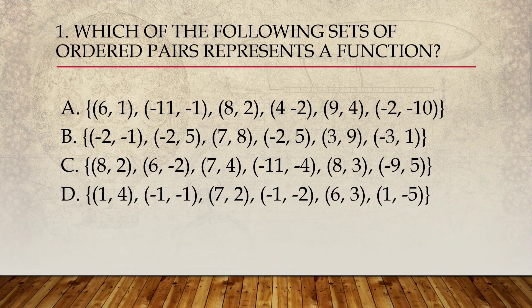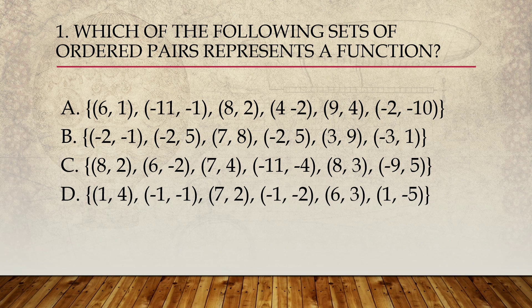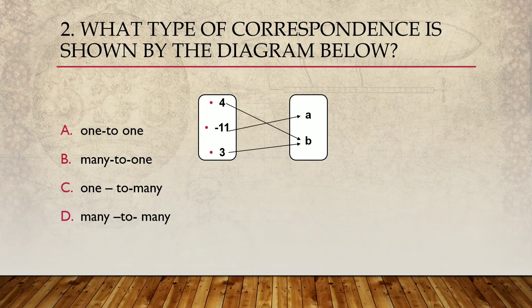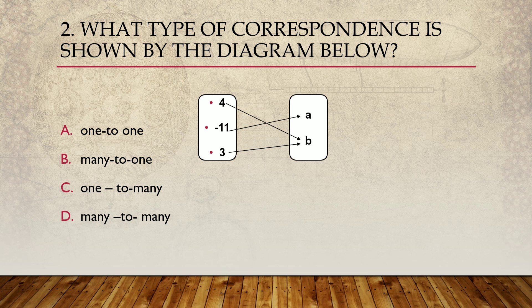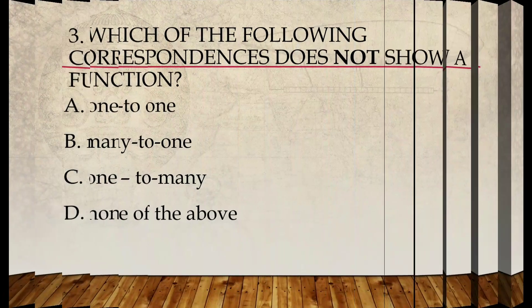Number one, which of the following sets of ordered pairs represents a function? Is it letter A, B, C, or D? And number two, what type of correspondence is shown by the diagram below? Is it one-to-one, many-to-one, one-to-many, or many-to-many?